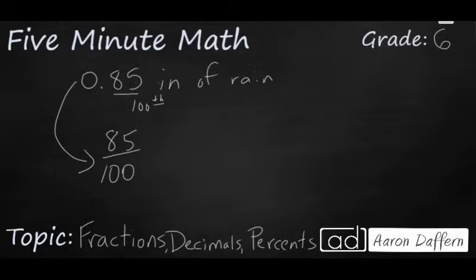So you need to find a number that divides evenly in 85 and 100 and in this case it's going to be fives.